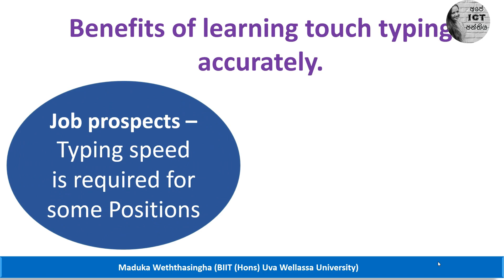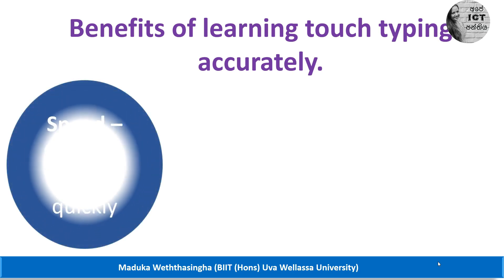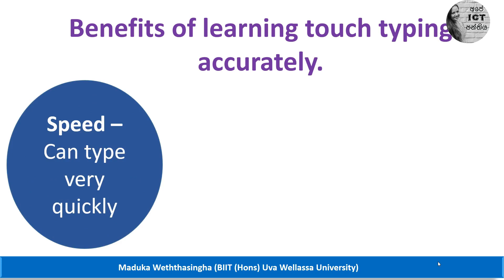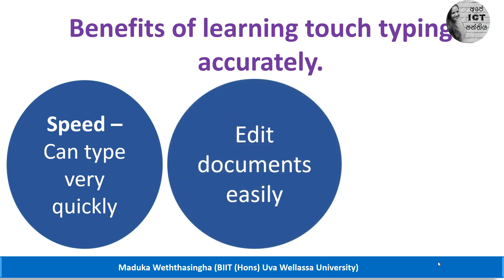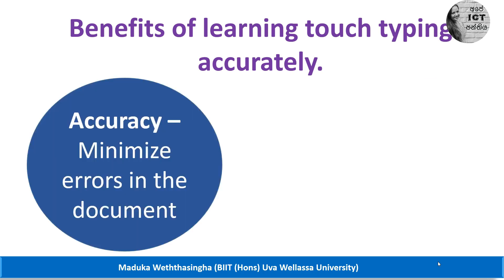Then we have job security. And health — touch typing prevents prolonged strain injuries. Third benefit is speed: by using touch typing we can type speedily and correctly. We can also edit our document very easily by using touch typing and it saves our time. And accuracy — if you use touch typing, there are a minimal number of errors in our document, so we can improve the accuracy of our typing.